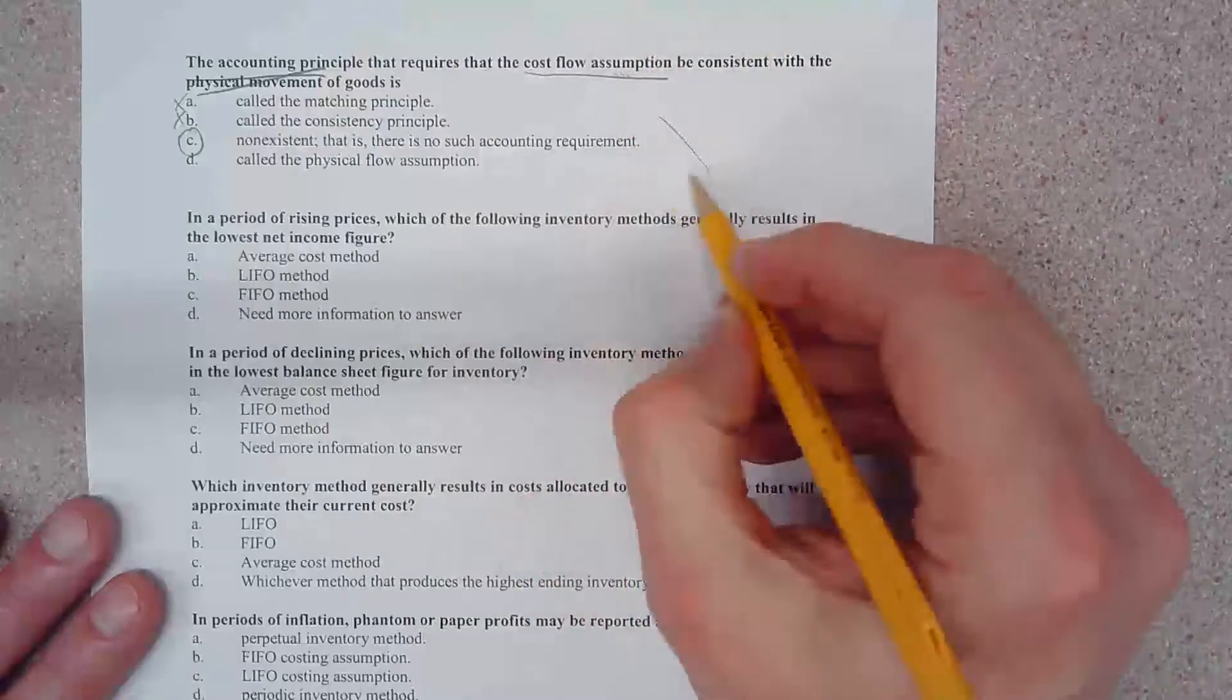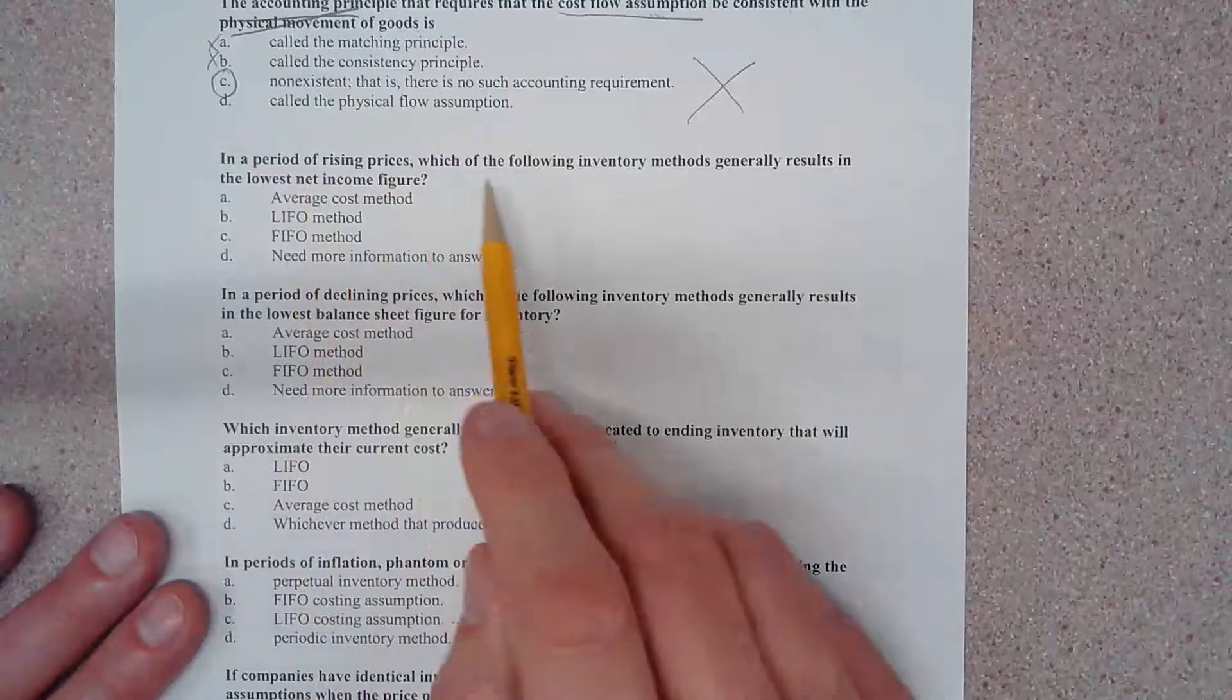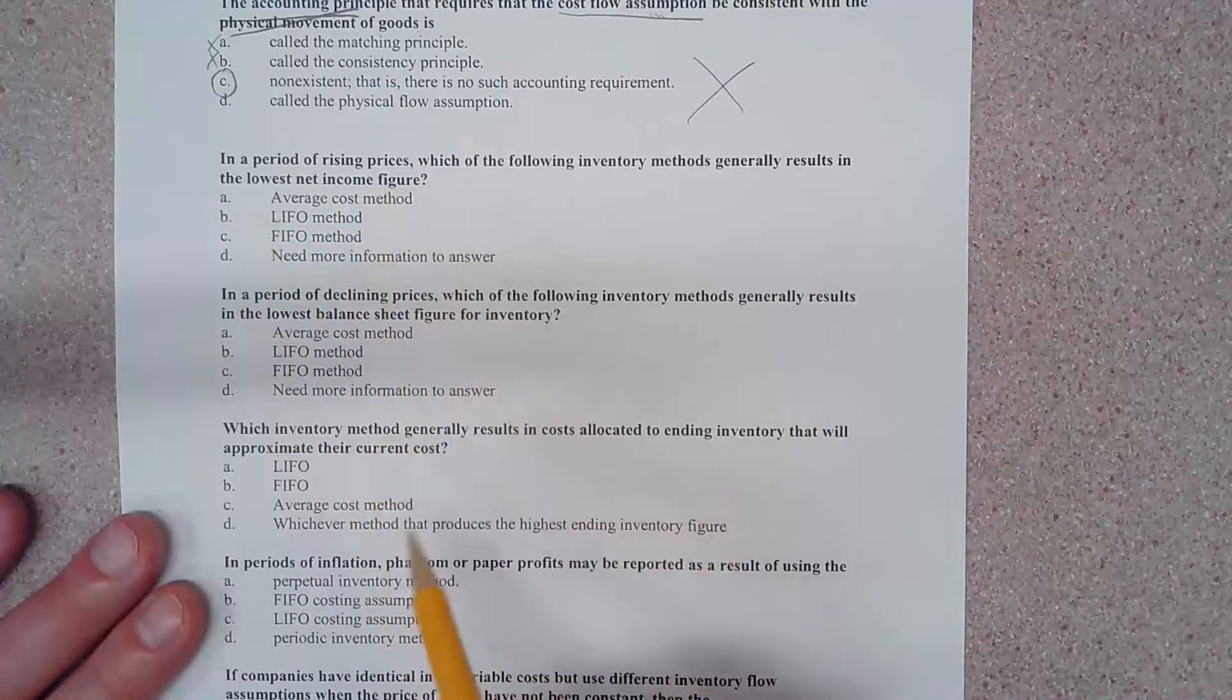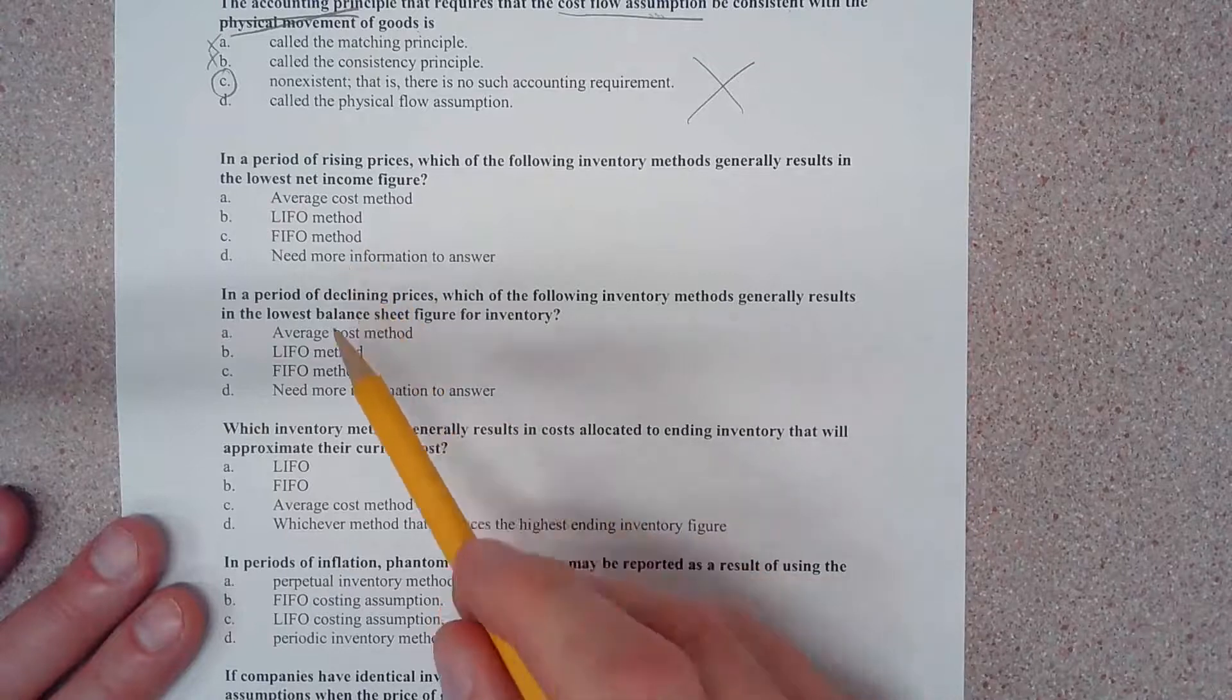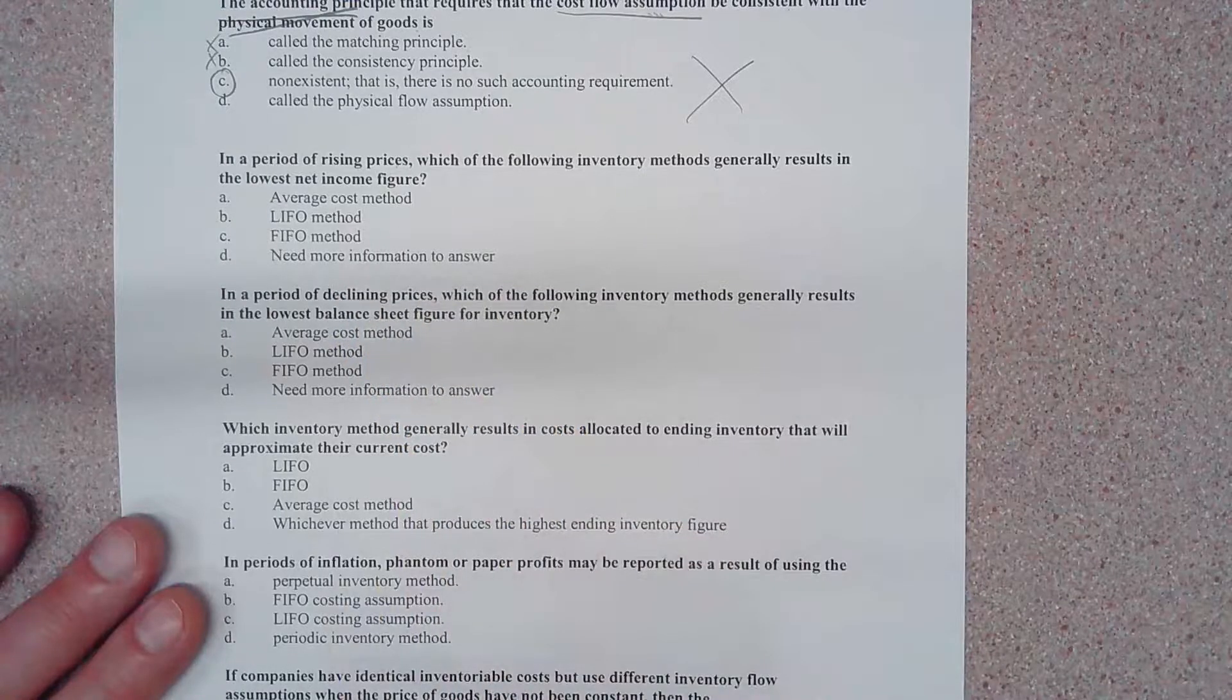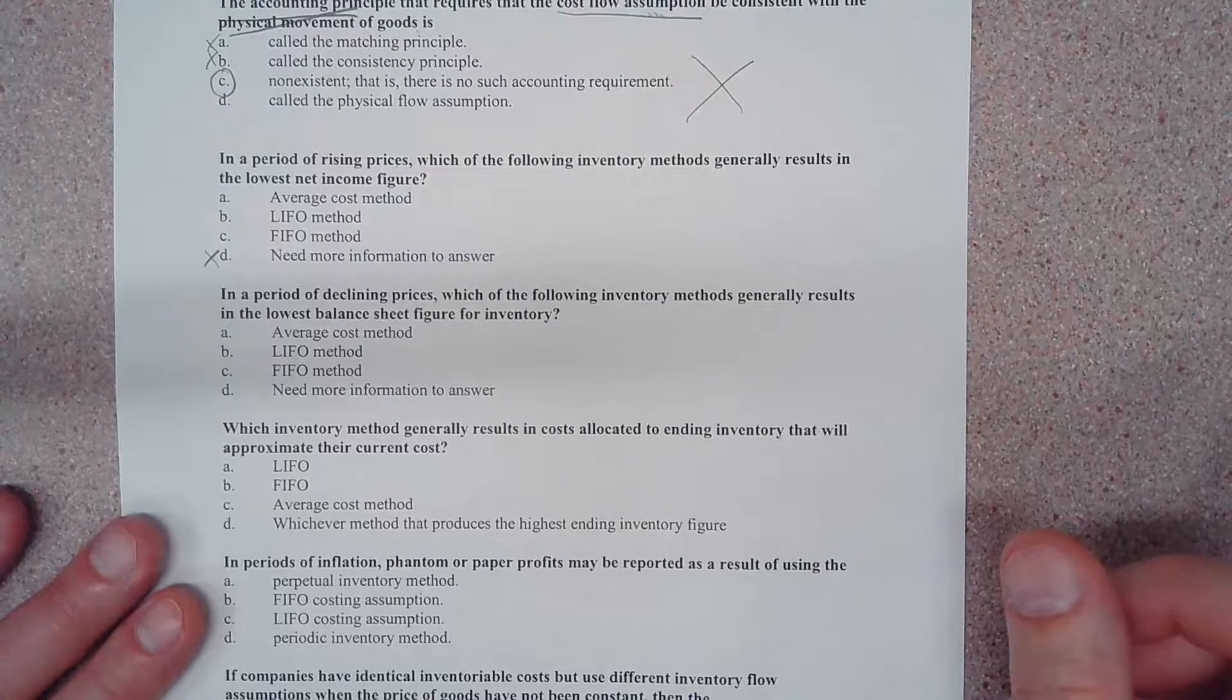Okay, so no requirement. Answer choice is C. Okay, next one. It says in a period of rising prices, which of the following inventory methods generally results in the lowest net income? Okay, so we have four choices. We have the average cost method or weighted average, we have LIFO, we have FIFO, looks like D is need more information to answer. So I want to say this right now: we absolutely have enough information to answer this question. So let's put an X right here.